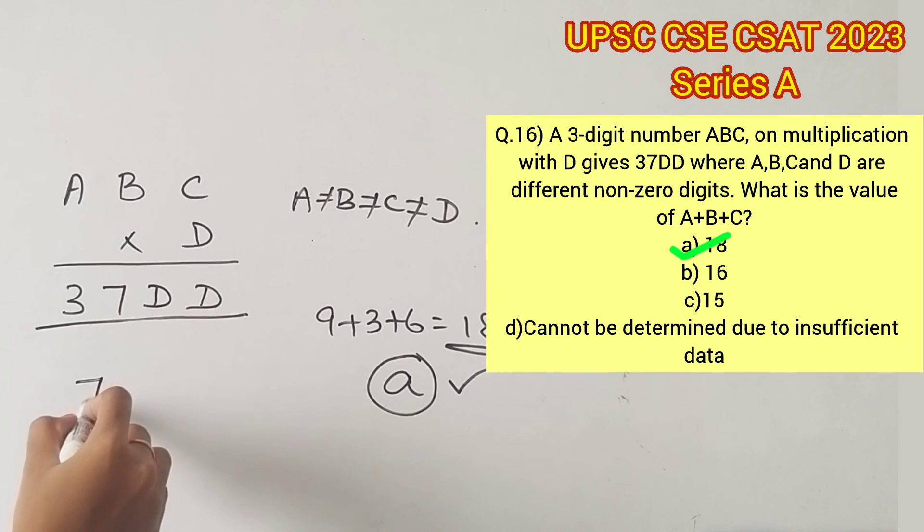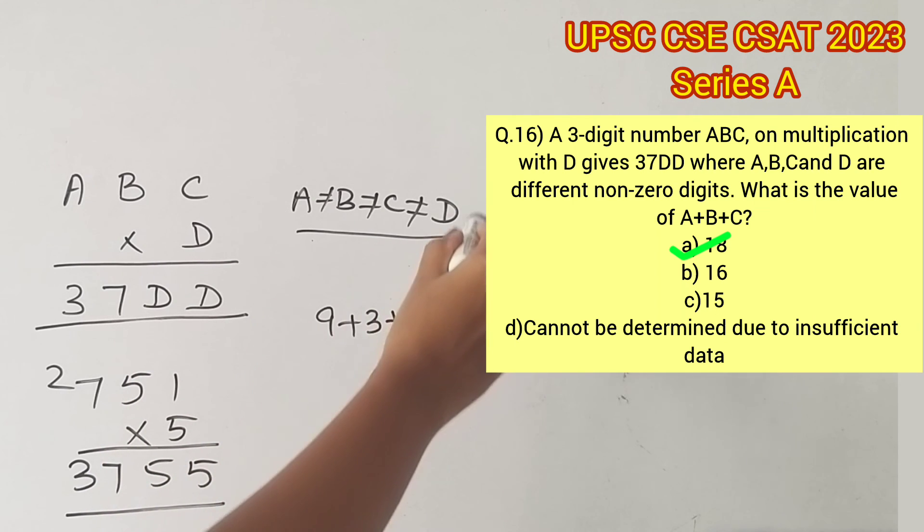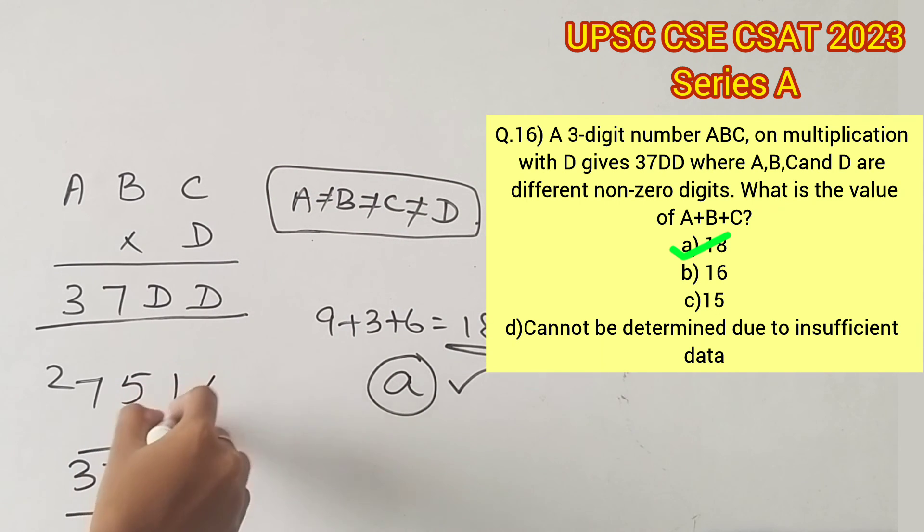There is also one other case that will solve this equation: 751 into 5, which gives us 3755. But it is important to notice that A, B, C, and D should take different values. Here B and D take the same values, that is 5. Therefore, this can be eliminated.